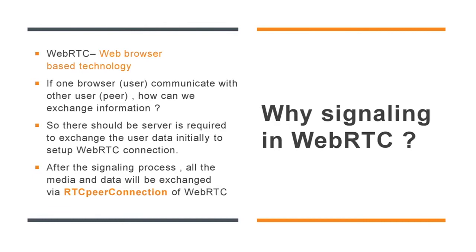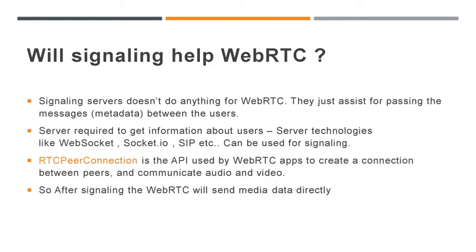After the signaling process, all the media and data will be exchanged via RTC peer connection of WebRTC. Now we understand what signaling is. Signaling servers don't handle the WebRTC media process themselves — they just assist in passing messages or metadata between users. We can write a server with the help of server technologies like WebSocket, Socket.IO, SIP, etc. After signaling, the RTC peer connection API used by WebRTC creates a connection between peers to communicate audio, video, and data. That means after signaling, WebRTC will send media data directly without the help of the signaling server.